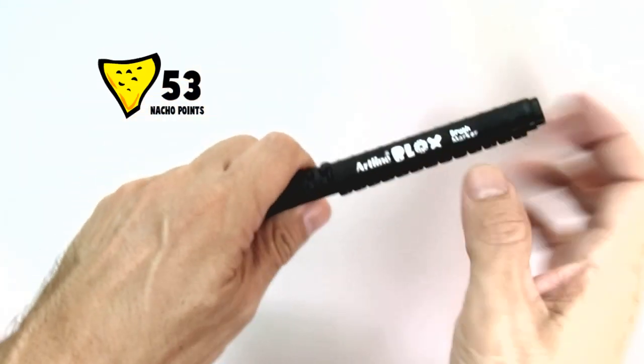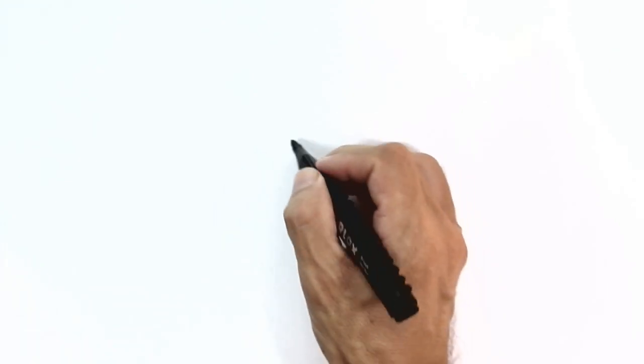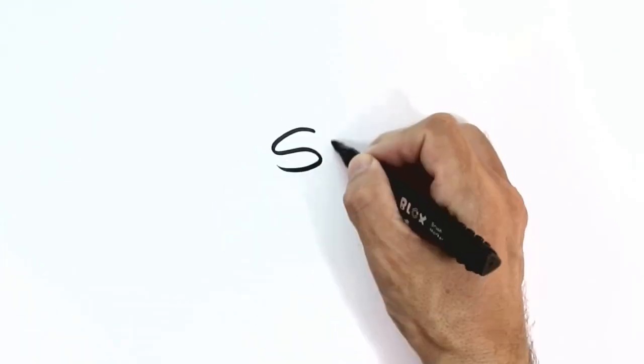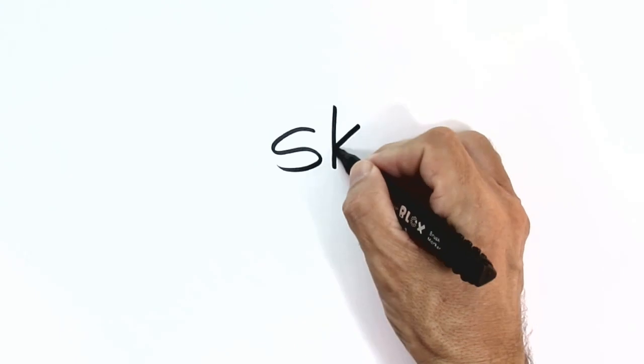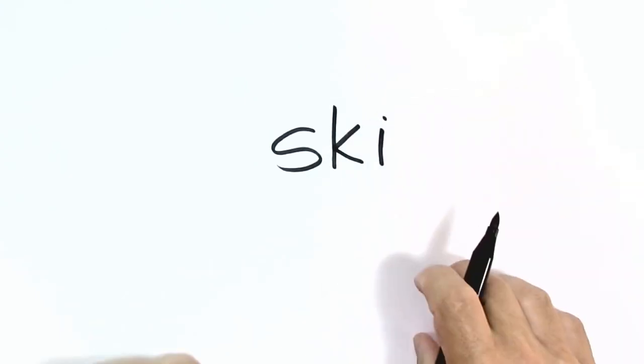Alright, like I said, well I didn't say it. If you can write, you can draw. So let's write the word Ski. Pretty short and easy word to do. There we go.